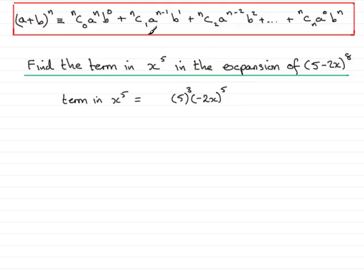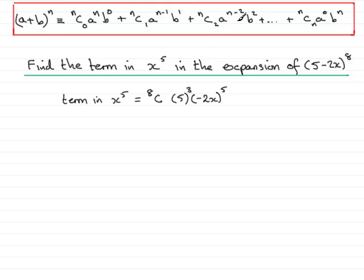All we now need to do is put in the nCr value. We know n will be the same as the power on the bracket, so that will be 8C something. What is the value that goes down here? When we look at all the nCr values in the binomial expansion, the number on the bottom is always the same as the power that the b part is raised to. Since the b part, minus 2x, is raised to the power 5, I put a 5 down there, giving me 8C5. This will give me the term in x to the 5.